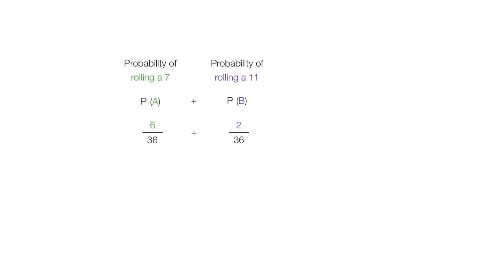If I add these together, I get 8 out of 36. The proper notation is equal to the probability of A or B, the probability of event A or event B.